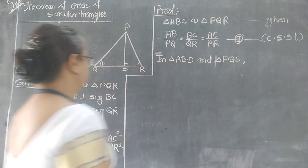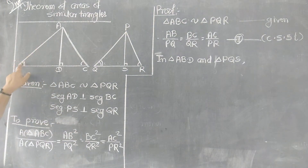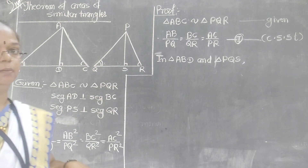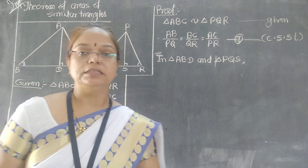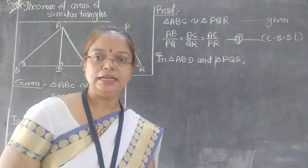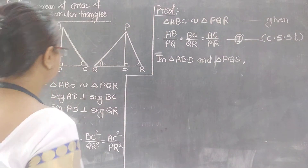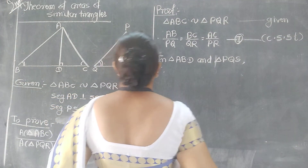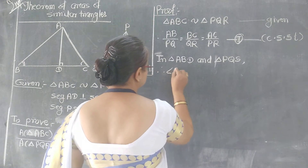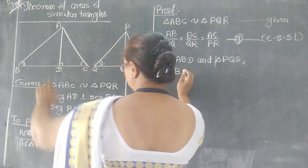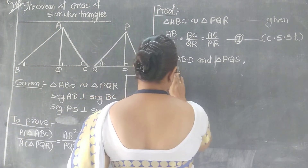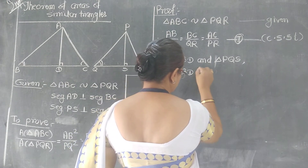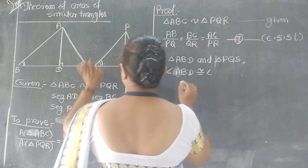What is given in the diagram? Angle B is congruent to angle Q. Since triangle ABC is similar to triangle PQR, their angles are congruent. Therefore, angle ABD is congruent to angle PQS.